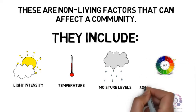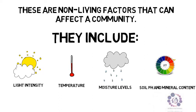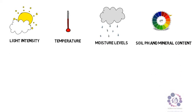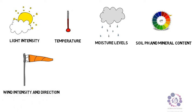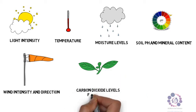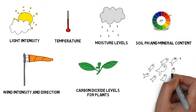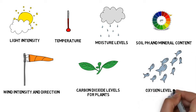Further abiotic factors include the soil pH and its mineral content, the wind intensity and the direction that the wind is blowing. For plants, the amount of carbon dioxide (CO2) that is available, and for aquatic life, the amount of oxygen that is available.